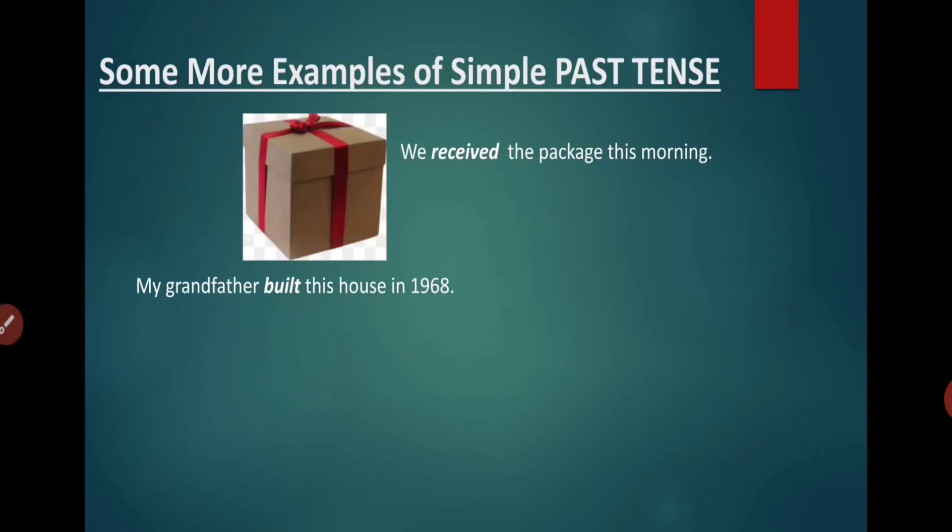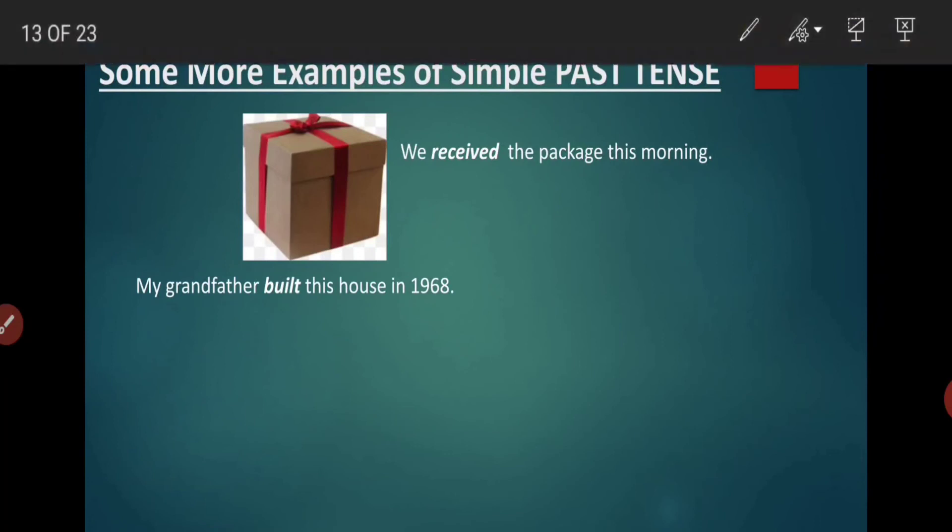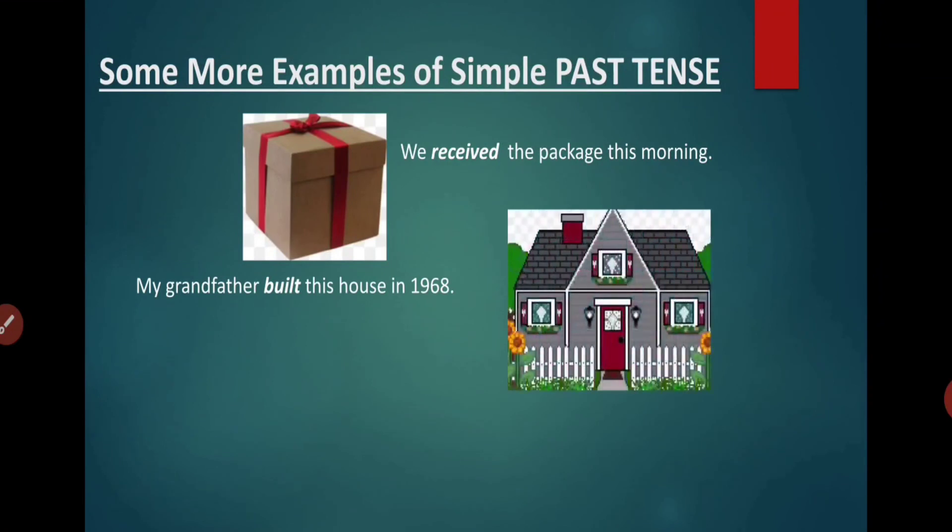My grandfather built this house in 1968. So the grandfather built this house, built, built means he has made years back. How many years back? He has made this house in 1968. And now it is 2020. So means it has already taken place in the past. So therefore we have used the past form of verb.